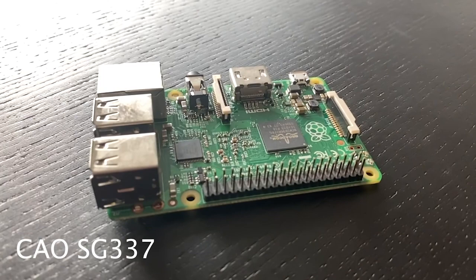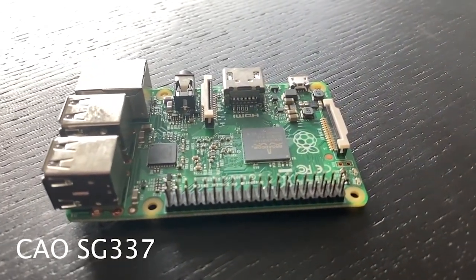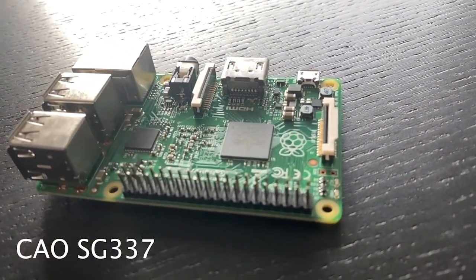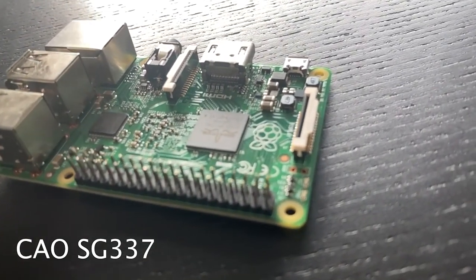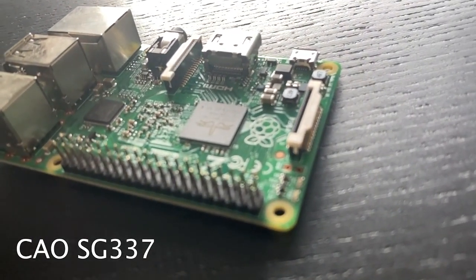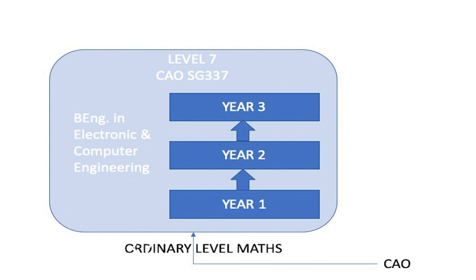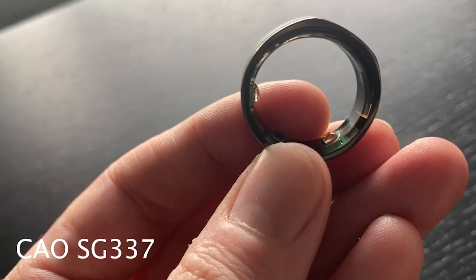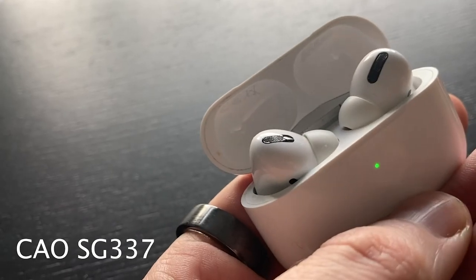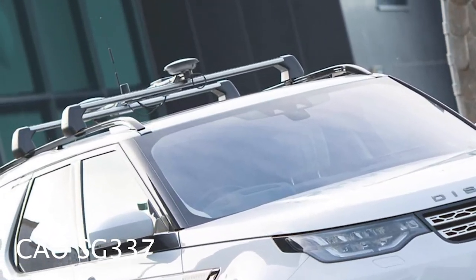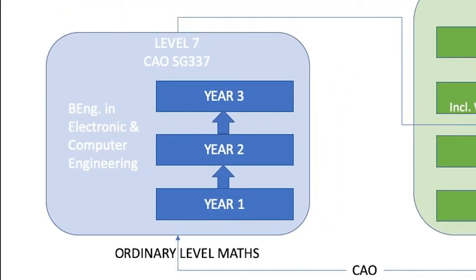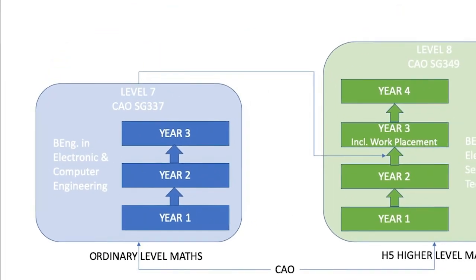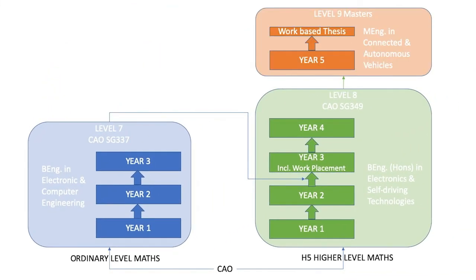If you are interested in technology or engineering but are not doing higher level maths, why not consider our Level 7 in Electronic and Computer Engineering? This is a three-year program that looks at the design and development of embedded electronic systems — the medical devices that keep us healthy, the consumer devices that keep us entertained, and the control systems that keep us safe on the road. You can then progress onto the Level 8 in Electronics and Self-Driving Technologies, and from there to the Masters. Check out the link below for more information.